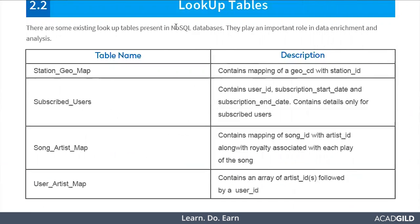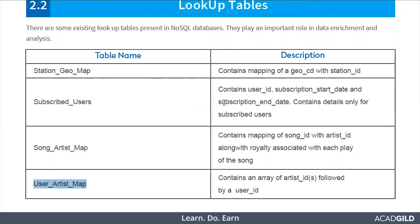There is something called lookup tables, which will be available in HBase. We will see what exactly the different lookup tables are and their descriptions. The first lookup table is station_geo_map, which contains the mapping of geo_CD and station ID. Geo_CD represents the different areas — A for USA, AU for Australia, J for Japan — and station ID is the unique ID for each radio station. Similarly, subscribe_users, song_artist_map, and user_artist_map will have different columns available.